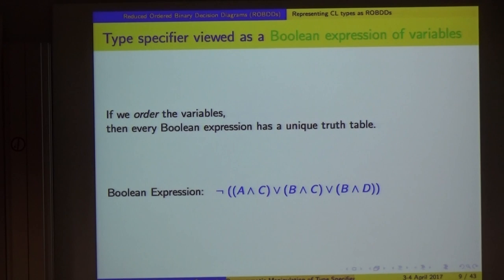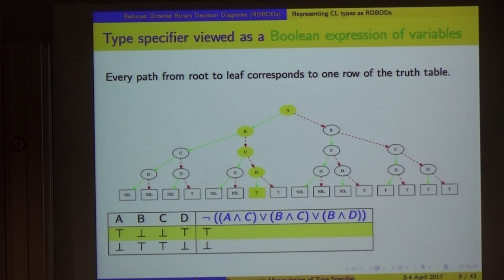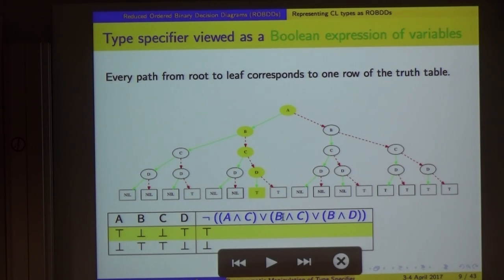If we order the variables - we have to specify some particular order, there's volumes written about what the best order is for different applications - but given an order of the variables, a unique truth table exists, and we can represent the truth table as a binary tree. The green arrow leaving A means that we're assuming A is true, and the red dotted arrow means that A is false. Every path from the root to a leaf represents one row in the truth table. This row represents that A is true because we follow the green arrow, B is false because we follow the red arrow from B, C is false, and D is true. We get true in the truth table, and what that means is that Boolean expression evaluates to true if those variables are as assigned.